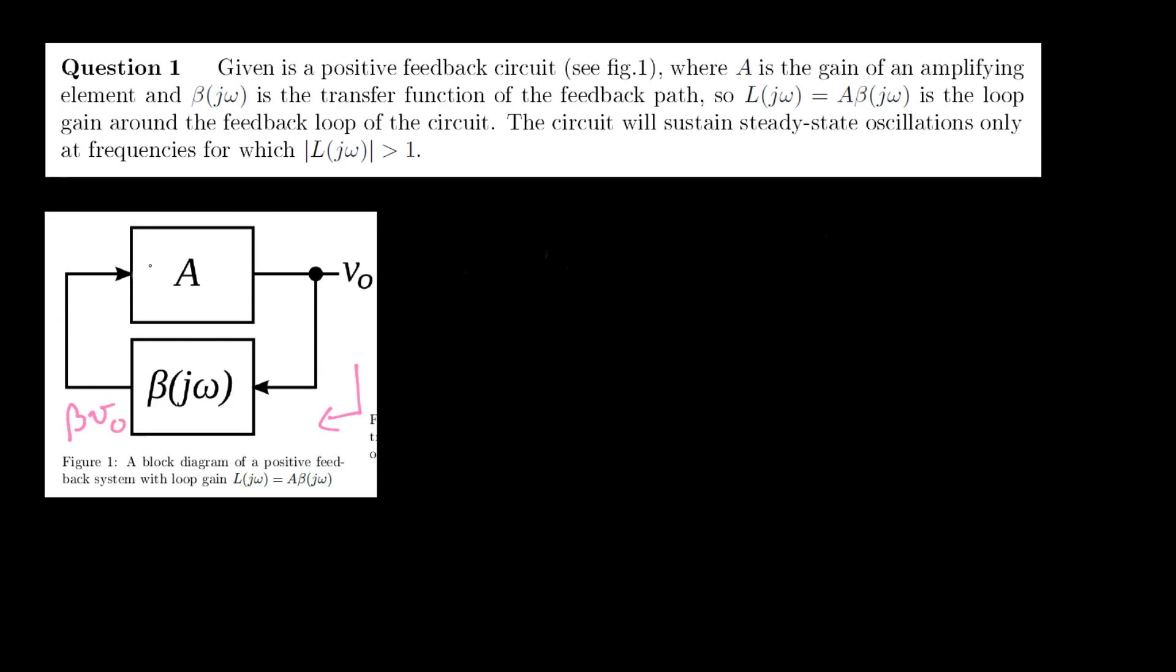And that will then be fed back into the amplifier here with a gain of A, giving us A beta vout. But since we've defined that as L here above, we can just write it as L vout.